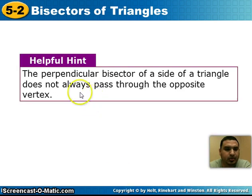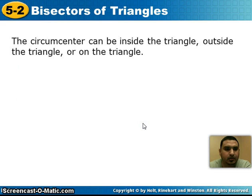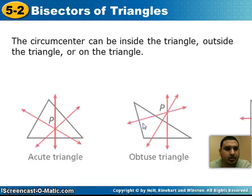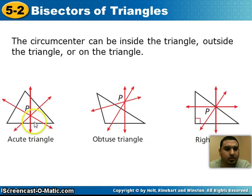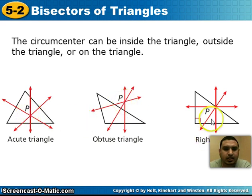Remember that the perpendicular bisector of a side of a triangle does not always pass through the opposite vertex. Here are some examples: when you have an acute triangle, the circumcenter is inside the triangle. For an obtuse triangle it is outside the triangle, and on a right triangle the circumcenter is actually on the hypotenuse.